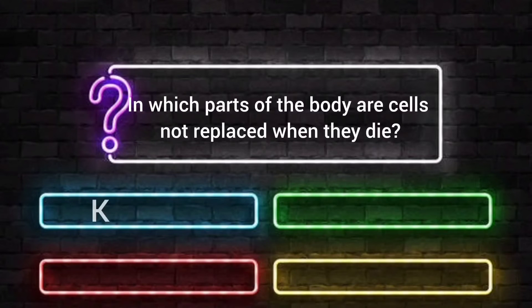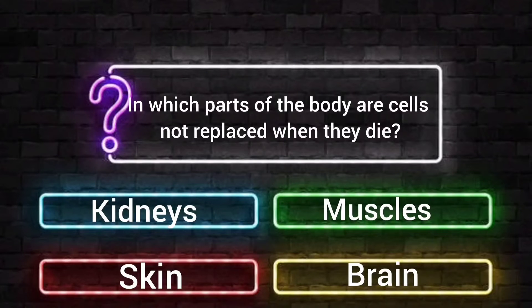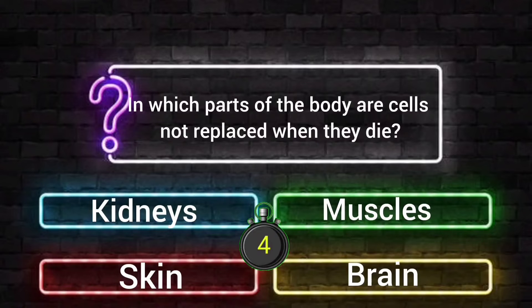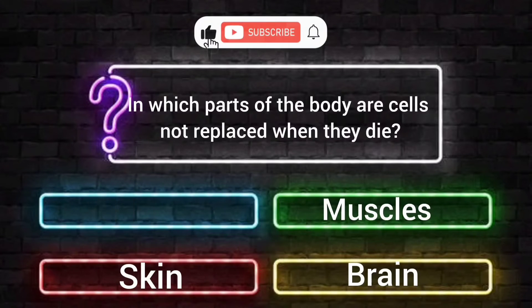In which part of the body are cells not replaced when they die? Option A: kidneys. Option B: muscles. Option C: skin. Option D: brain. Your time starts now. The answer is kidneys.